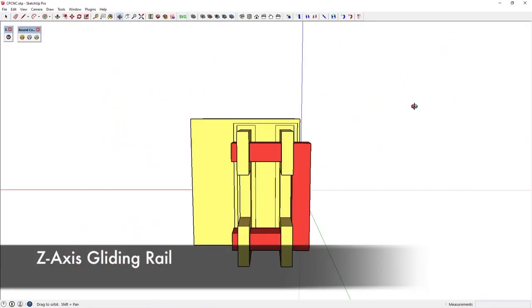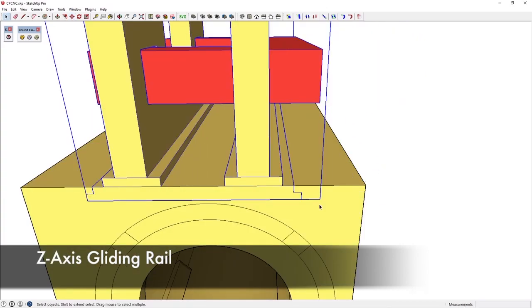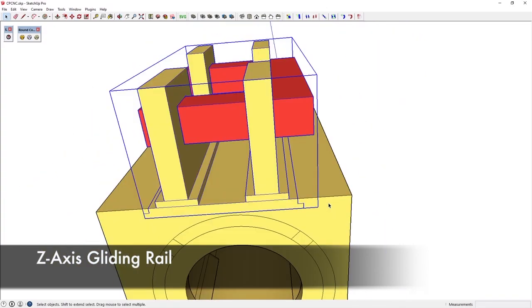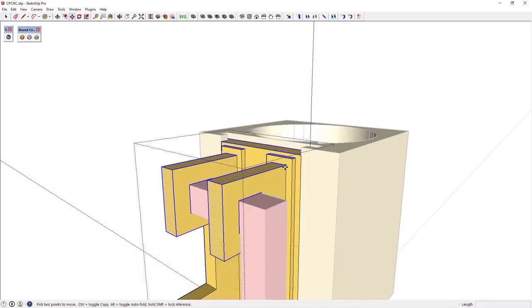First, I wanted to design the Z-axis also including wheels. But since there should be very little up and down movement, and since PLA glides very well on itself, I decided to use the KISS principle. Keep it stupid simple.